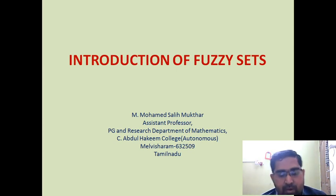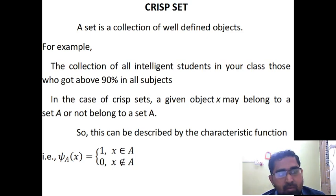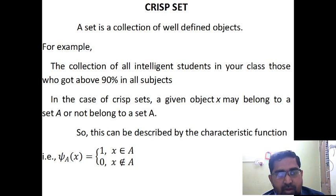First of all, let us know the difference between Crisp Set and Fuzzy Set. What is meant by Crisp Set? It is nothing but a collection of well-defined objects. For example, the collection of all intelligent students in a class — those who got above 90% in all subjects. It is a well-defined collection, so it is a set.